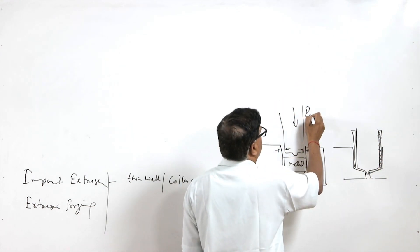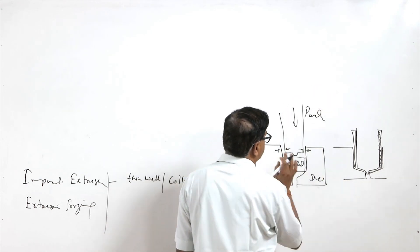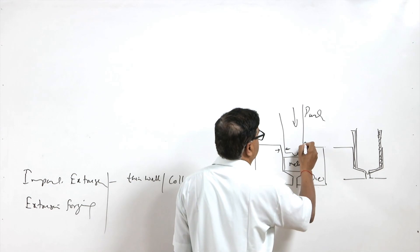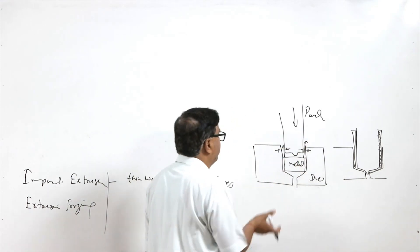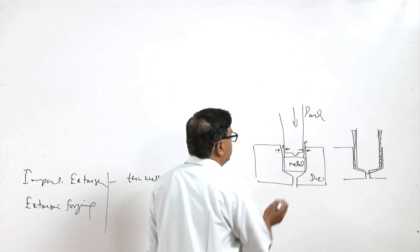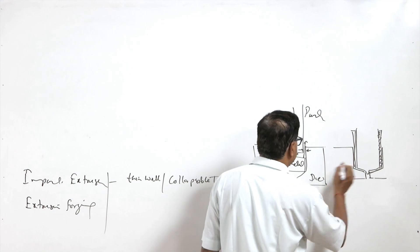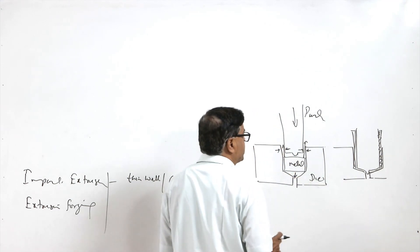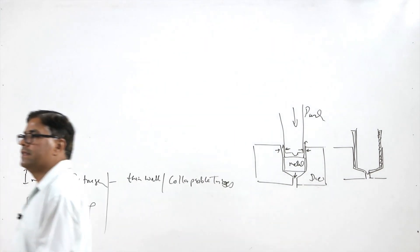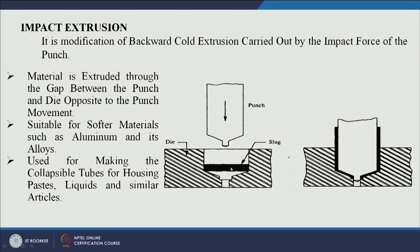The punch impacts the metal and the metal starts flowing back. This is basically back extrusion — the metal flows backward and this end will be making the opening for the tube.